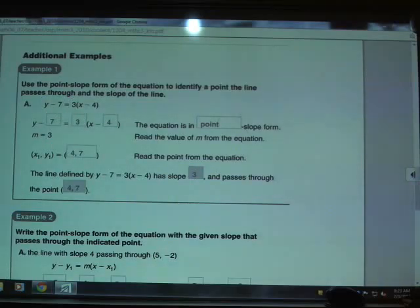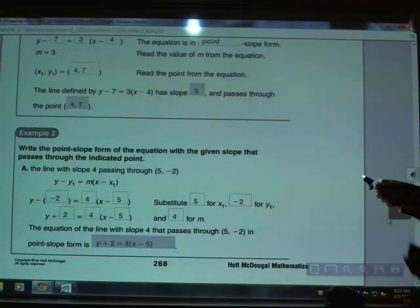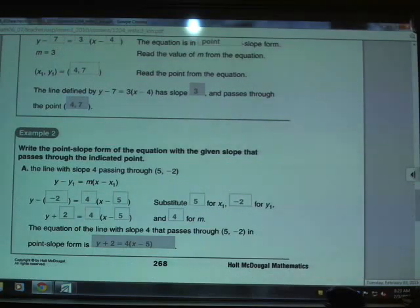Let's go ahead and go on and take a look at the next example here. It's asking me to write the point slope form of an equation with the given slope that passes through the indicated point. So, the line has a slope of 4 and it passes through the point 5 comma negative 2.